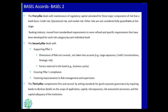The second pillar is about the supervisory review process and supports Pillar 1. It also studies dimensions of risk not covered in the first pillar — for example, large exposures taken by the bank, credit concentration in one particular sector or customer type, or any kind of strategic or business risk. It also tries to incorporate external factors like business cycles, as every sector of business goes through cycles of peaks and troughs.